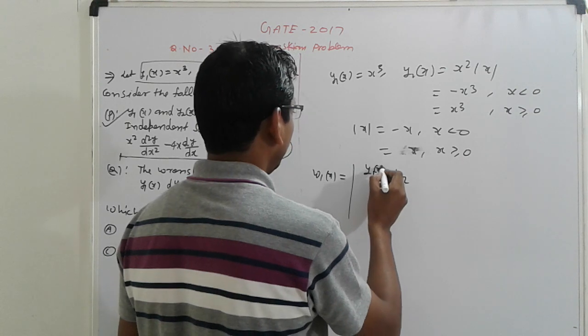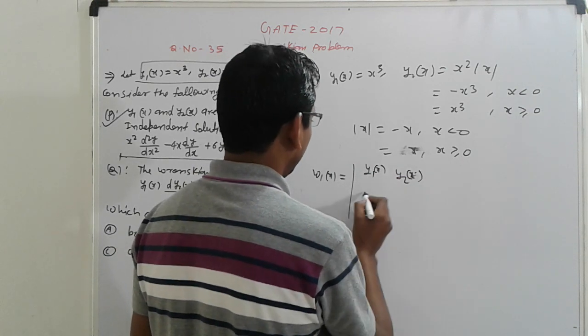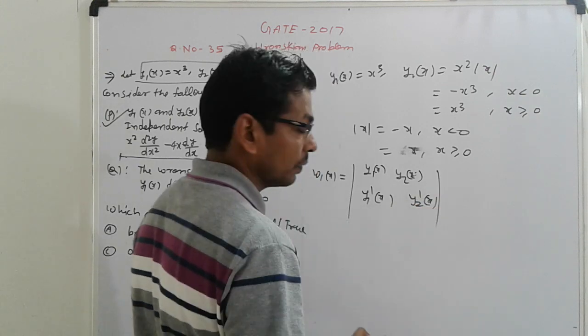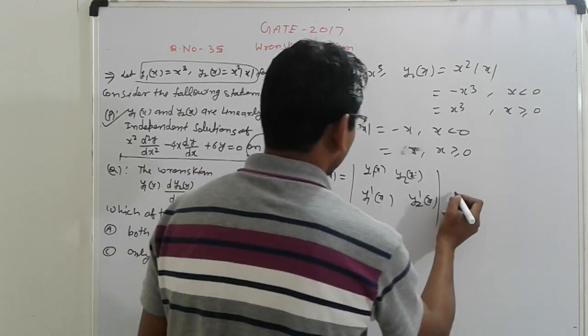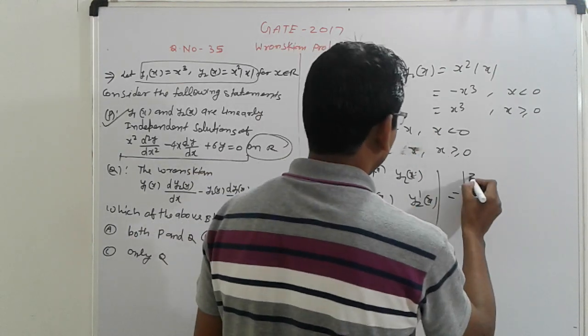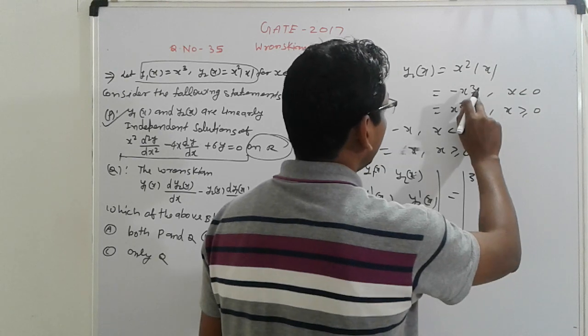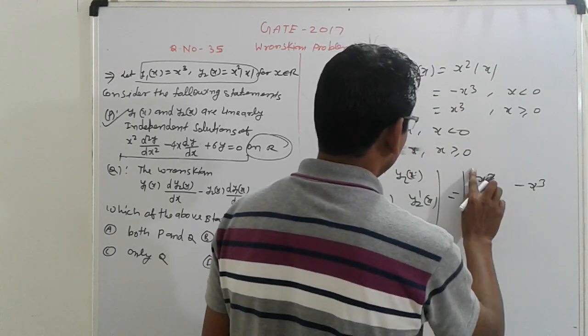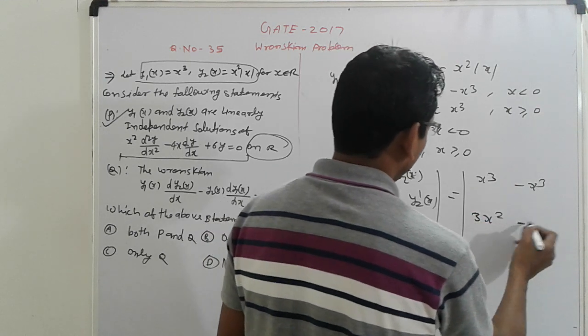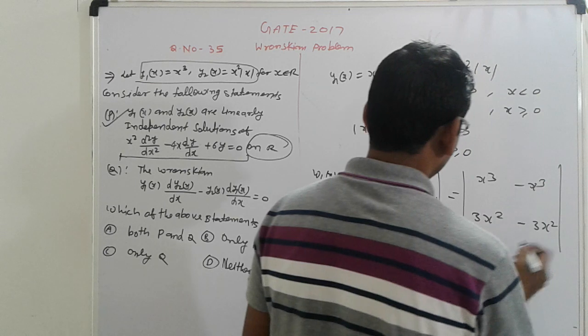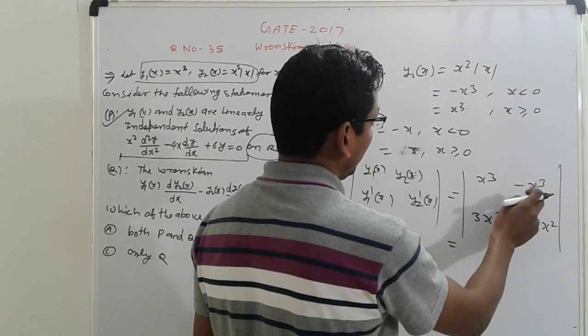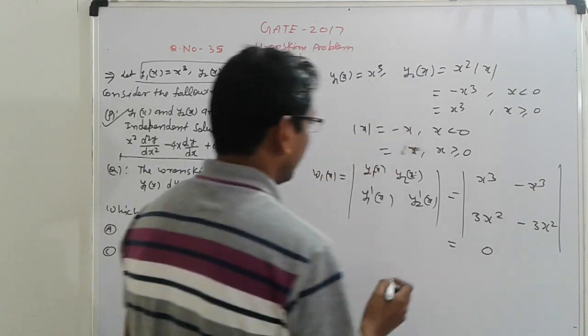Check, find out the Wronskian here. Y1, Y2, Y1', Y2'. Check out. This is Y1' = 3X². Here minus X³. Here, sorry, X³. Here 3X² minus 3X². So this is 3X² + 0.